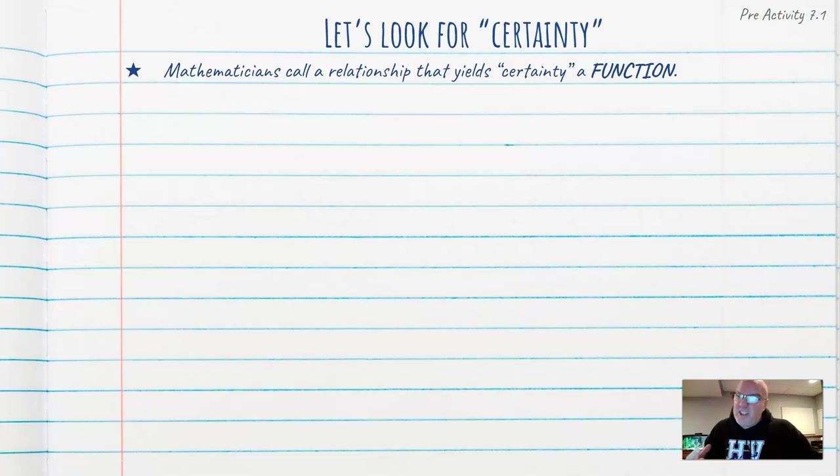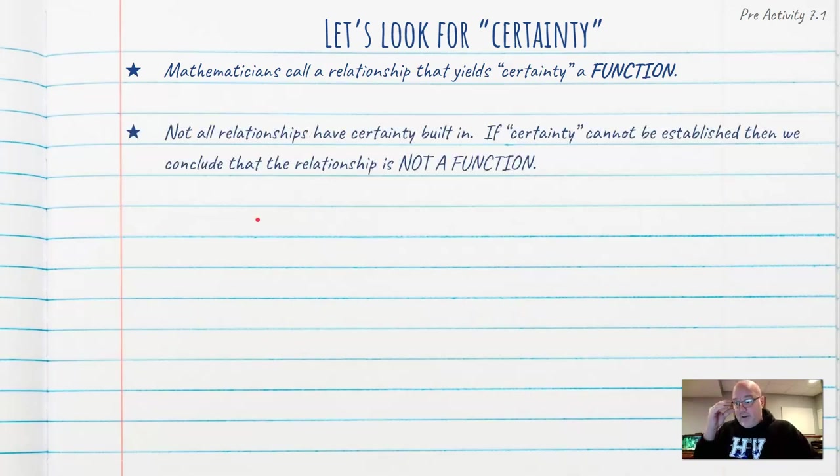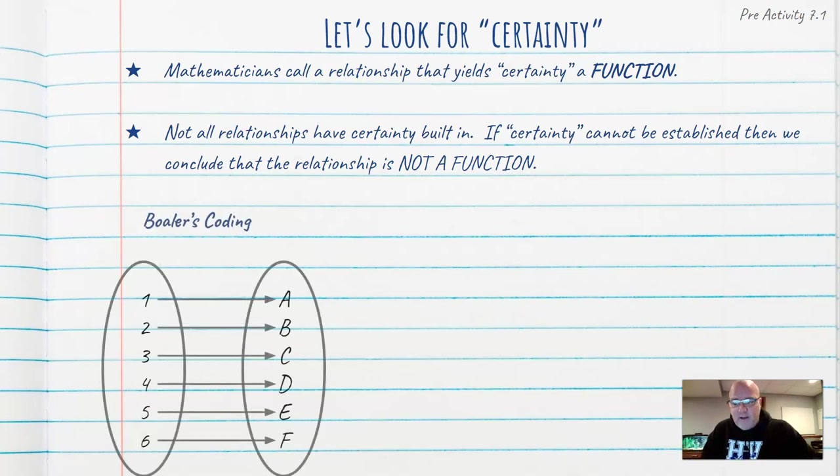When we can see that there's certainty in a relationship, we're going to call that a function. And you've heard that term used before, but I'm going to tell you we're going to call this a function. Now, let's be clear, all relationships don't have certainty built in. So if certainty cannot be established, then we're going to conclude that the relationship is not a function.